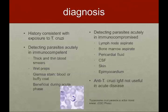Diagnosis is very difficult. You have to have a history consistent with exposure to T. cruzi — coming from an endemic area or visiting that area, having had a blood transfusion or organ transplant in that area, or having visited rural areas. Detection of the parasite in the immunocompetent patient during acute disease: you can do a thick or thin blood smear, wet preps, and Giemsa stain for blood and buffy coat. This is usually beneficial during the acute phase when parasitemia is high. In immunocompromised patients, you can do tissue aspirates — especially lymph node and bone marrow — pericardial fluid, biopsy of the epimyocardium, skin, CSF, et cetera. During the acute phase, anti-IgM is not very useful and is not recommended.